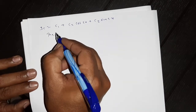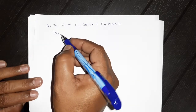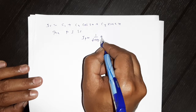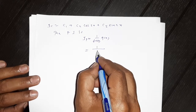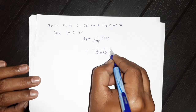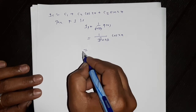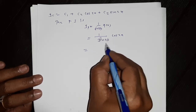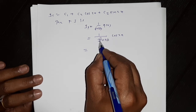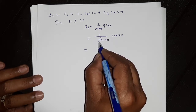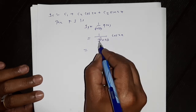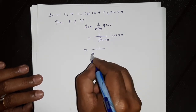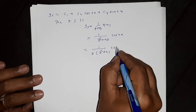Then the particular integral is y_p = (1/f(D))Q(x), that is 1/(D³ + 4D) · cos(2x). There are two rules. If we replace D² by -4, then D³ + 4D = D·D² + 4D = D(-4) + 4D = 0, so the denominator becomes zero. We apply the second rule. Take D as common: 1/D · 1/(D² + 4) · cos(2x).